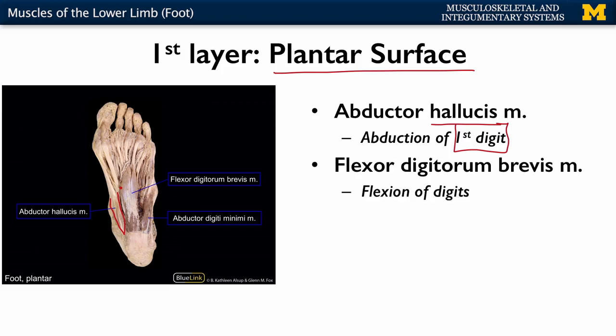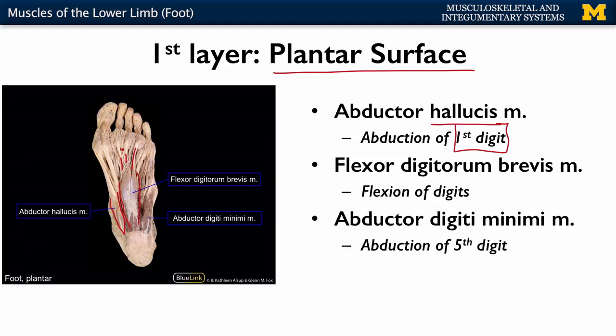Your flexor digitorum brevis muscle, which you can see right here, has tendons extending to the digits, allowing for flexion or curling in of the toes. And on the lateral side, you have the abductor digiti minimi, so moving that fifth digit away from the midline, which you can see right here.